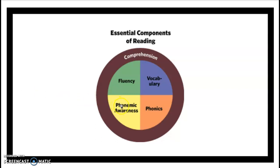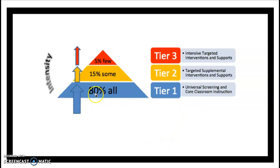We have phonemic awareness, phonics, fluency, vocabulary, and comprehension. We also talked in class about tiered instruction where 80% of your students might be reading at grade level, but then you have about 20%. About 15% of them might just need some small group targeted instruction, versus 5% who might need that tier 3 intensive targeted instruction and supports.